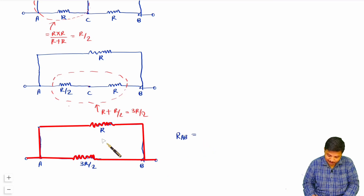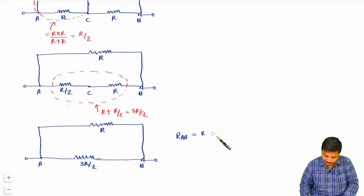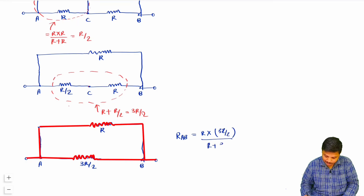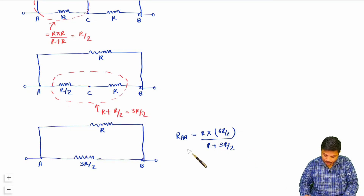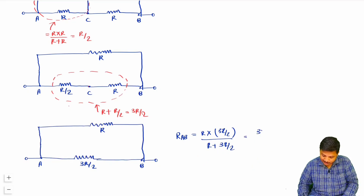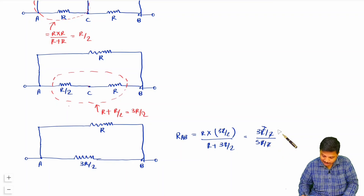R_AB is the parallel combination of R and 3R/2, which equals R×(3R/2) divided by R + 3R/2. That gives (3R²/2) divided by (5R/2). The 2's and one R cancel, leaving R_AB = 3R/5.